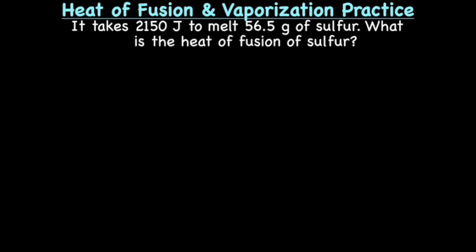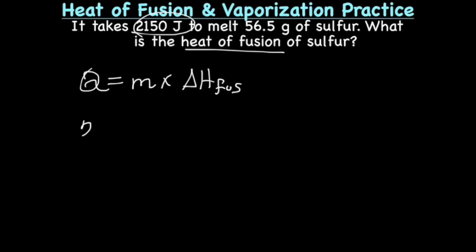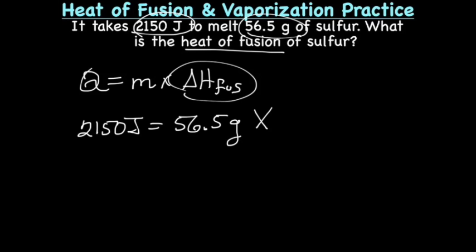Alright, so this time we are looking at heat of fusion. So we'll be using the formula Q, which is the amount of heat, equals the mass times the heat of fusion. Okay, this time they give us a heat unit, so that must be our Q. So we'll have 2150 joules equals the mass, which is 56.5 grams. And what we're trying to find this time is the heat of fusion.